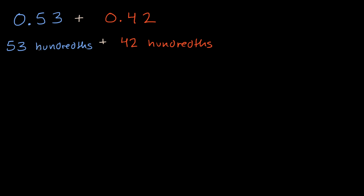If I have 53 of something and I'm going to add 42 of that same something to it, what am I going to get? Well, what's 53 plus 42? In my head I'd say 50 plus 40 is 90, and three plus two is five.